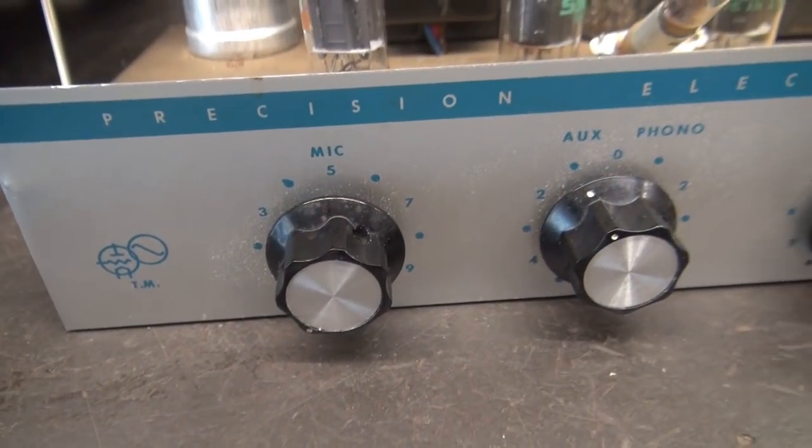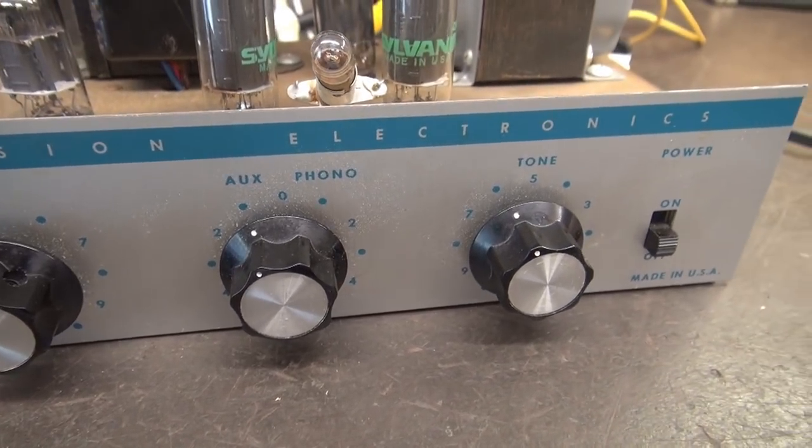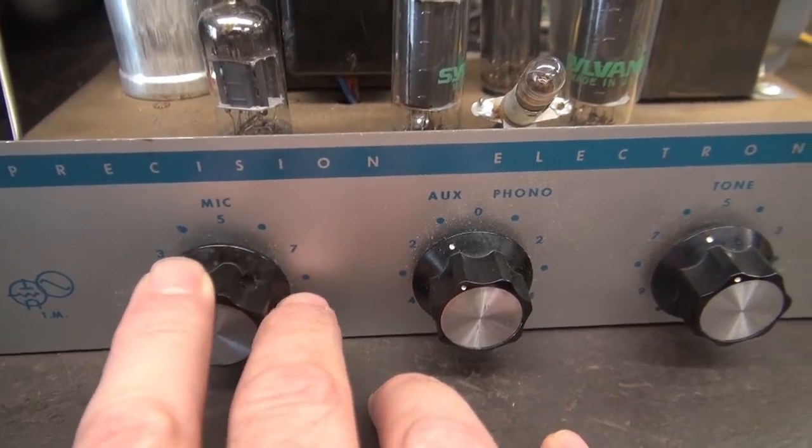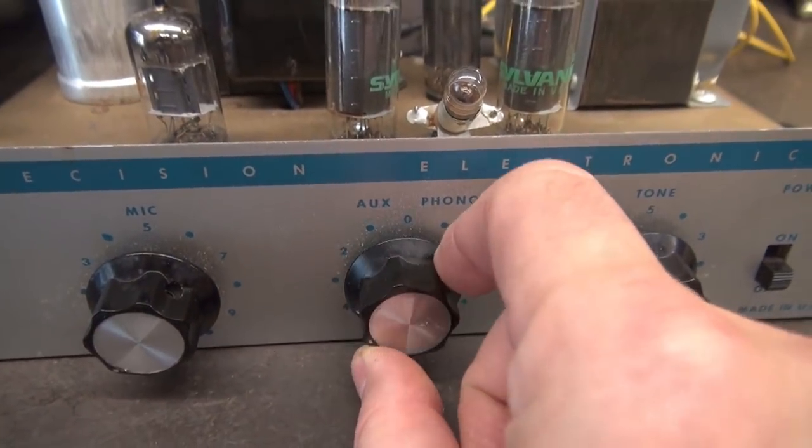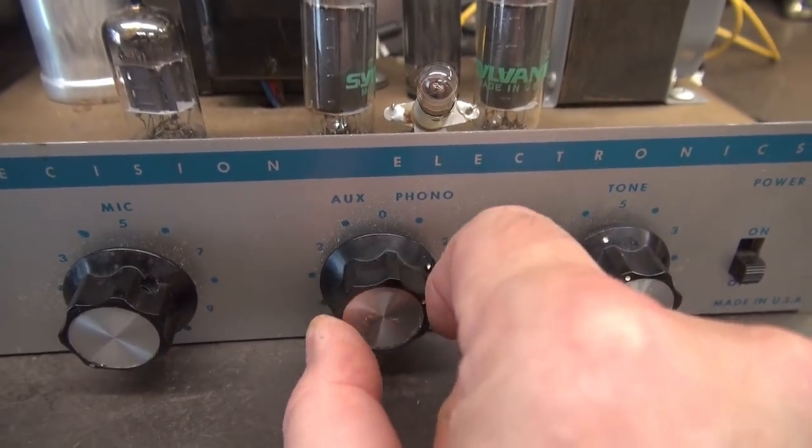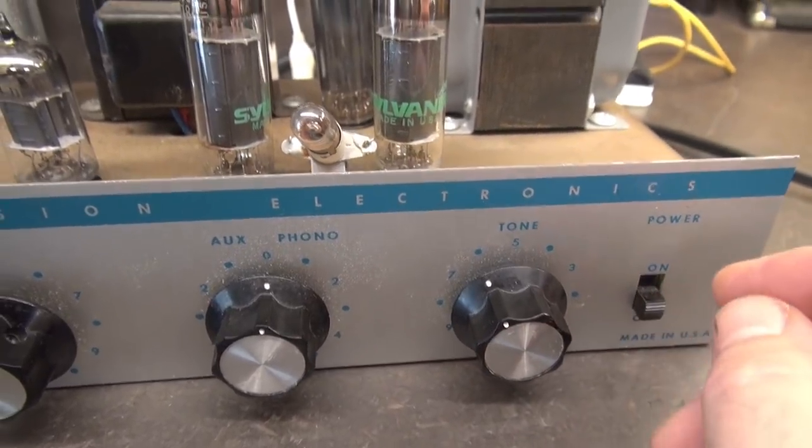So let's go over the chassis, see how this thing is built and then I'll tell you what's wrong with it and what I plan to do. Here's the front panel of the little S10 amplifier made by Precision Electronics. Controls line up: we have microphone gain and then a panning pod for auxiliary or phonograph. I'll show you those inputs on the back, then a simple tone and your on-off switch.